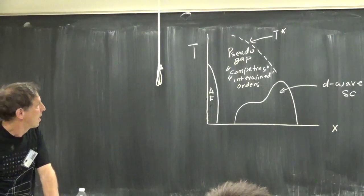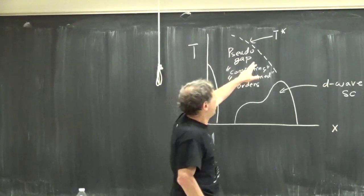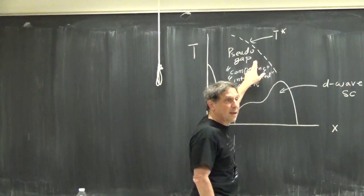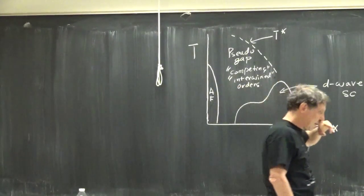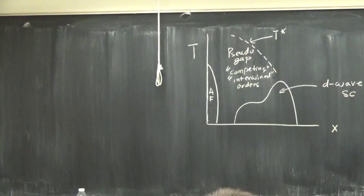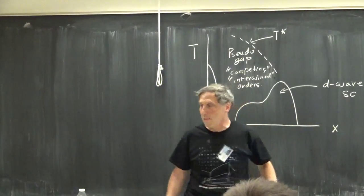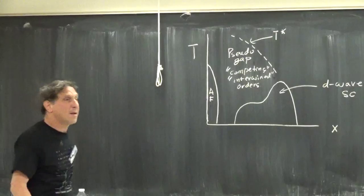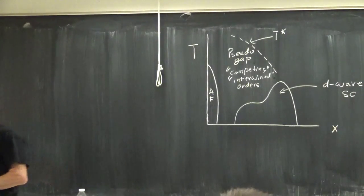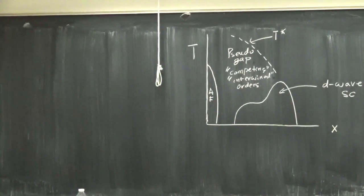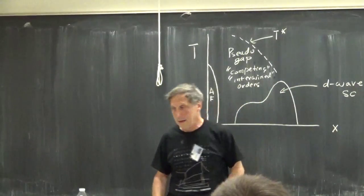The T-star line — does it go to x equals zero or does it just stop somewhere? Since this line is a little bit ill-defined, it's a little bit ill-defined how you want to end it. There are certainly lines that have been identified in experiment that penetrate into the superconducting dome, and there are certainly pseudo-gap phenomena that extend beyond — and to some extent which way we draw it seems to depend a little bit on which particular material in the family we look at.